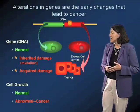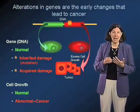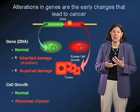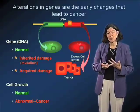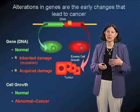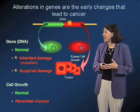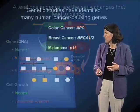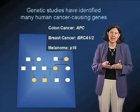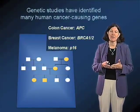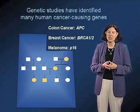These genetic changes can be inherited and passed from parent to child, or they can be acquired over time by exposure to chemical carcinogens, too much sunlight, etc. We now have a much deeper understanding of some of the basic genetic causes that give rise to tumors.